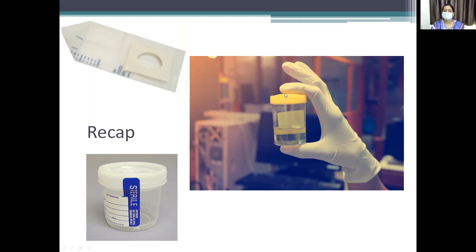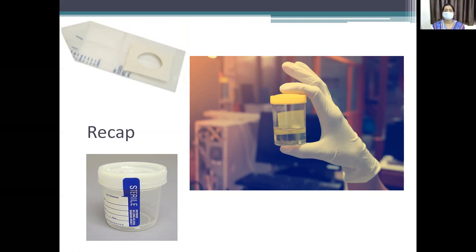We also spoke about the strength, using the example of tea. For strength, we measure pH and specific gravity. For pH, if the urine is acidic, the blue litmus paper turns red; if it is alkaline, the red litmus paper turns blue. pH is also important in the formation of some organized or unorganized sediments.